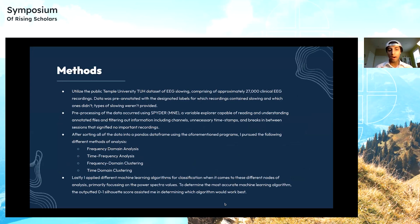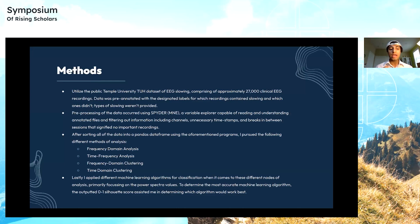For the methods, I first utilized a public Temple University TUH dataset of EEG slowing, comprising approximately 27,000 clinical EEG recordings. Data was pre-annotated with designated labels for which recordings contained slowing and which ones didn't, but the types of slowing were not provided — which was what I had to solve. Pre-processing of data occurred using Spyder MNE, a variable explorer capable of reading annotated files and filtering out information including channels, unnecessary timestamps, and breaks between sessions.